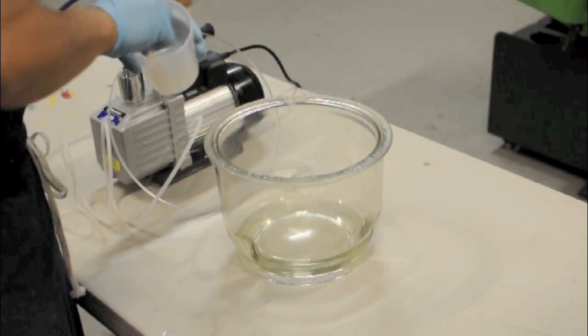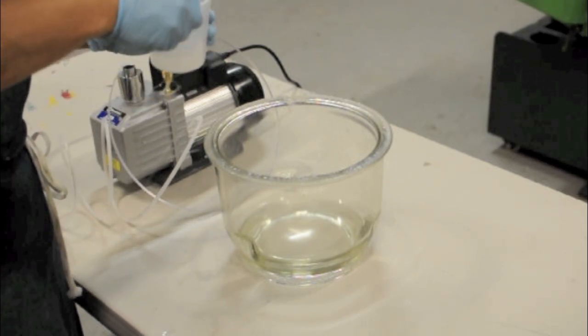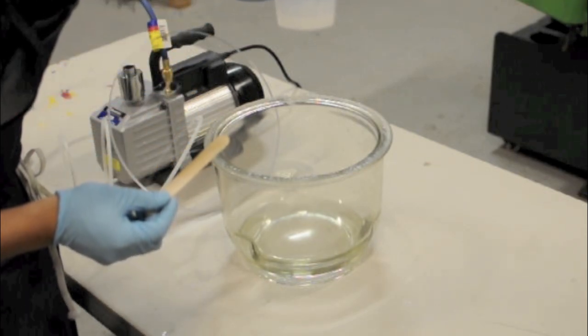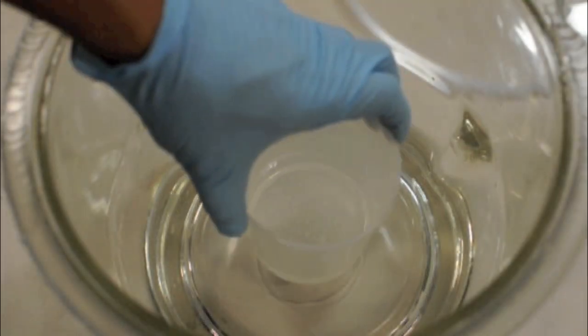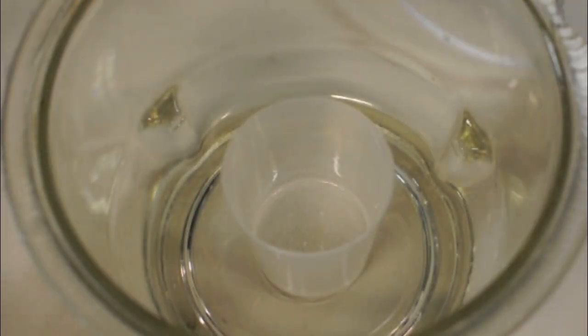Once again, we want to make sure that our resin is properly mixed. The air that we introduced will be removed in our degassing chamber. When degassing resin by this method, always be sure to use a container that is much larger than the amount of resin you wish to degass.